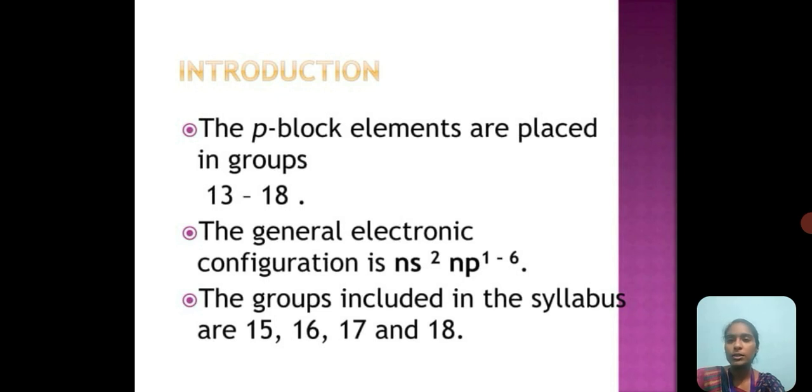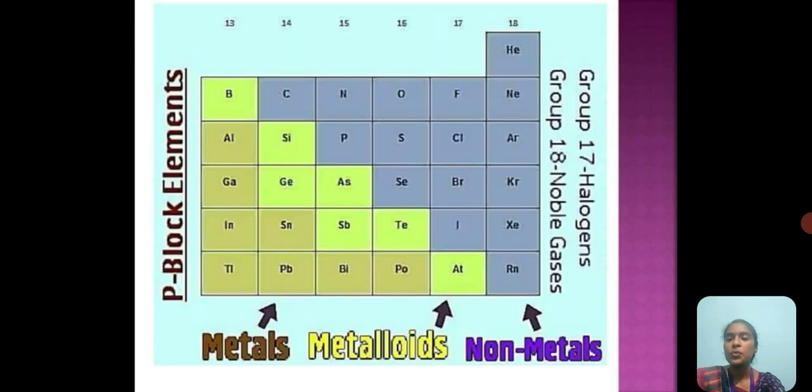Introduction to P-Block Elements. P-Block Elements are arranged in groups 13 to 18. The general configuration is NS2, NP1-6. In this syllabus, we have group 15 and group 16. This is the basic outline of P-Block, where we can separately see the metals, metalloids, and non-metals using different colored arrangements. Group 17 is called Halogen family, group 18 is the noble gases. We are going to see the group 15 Nitrogen family and group 16 Oxygen family in the upcoming menus.